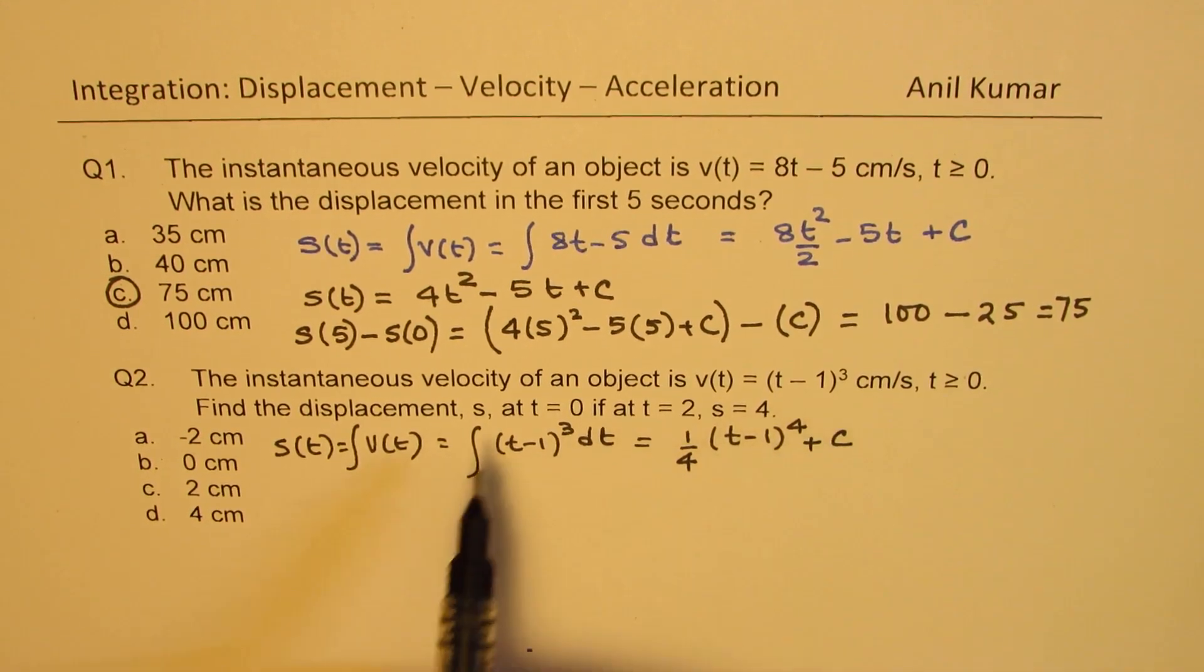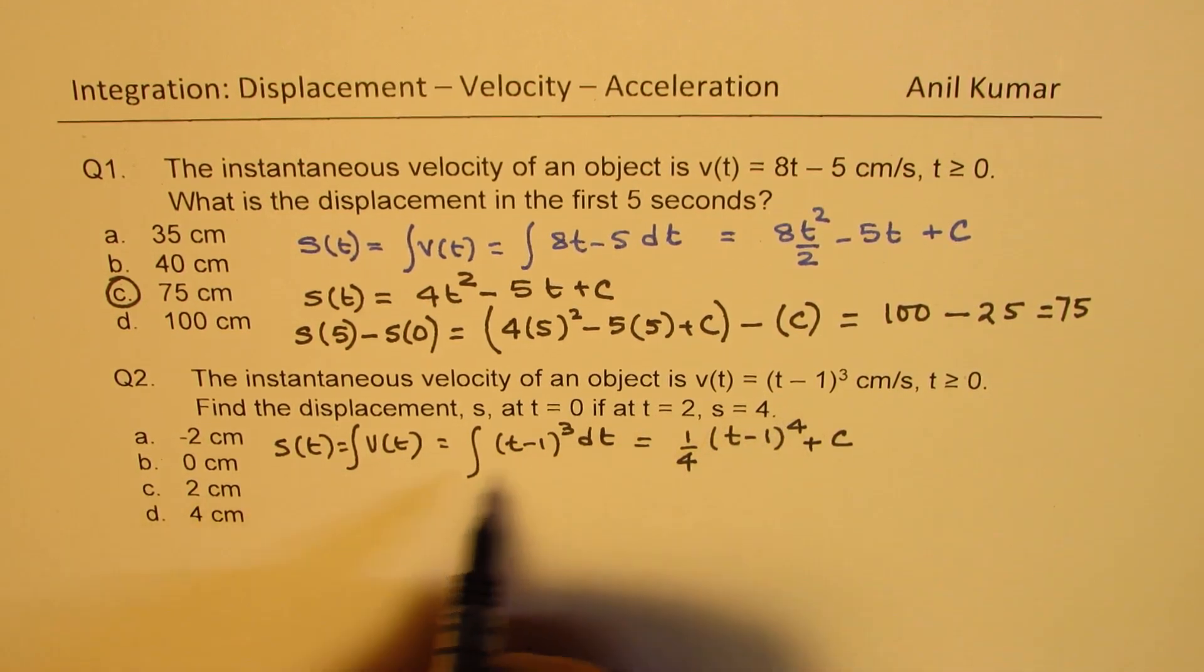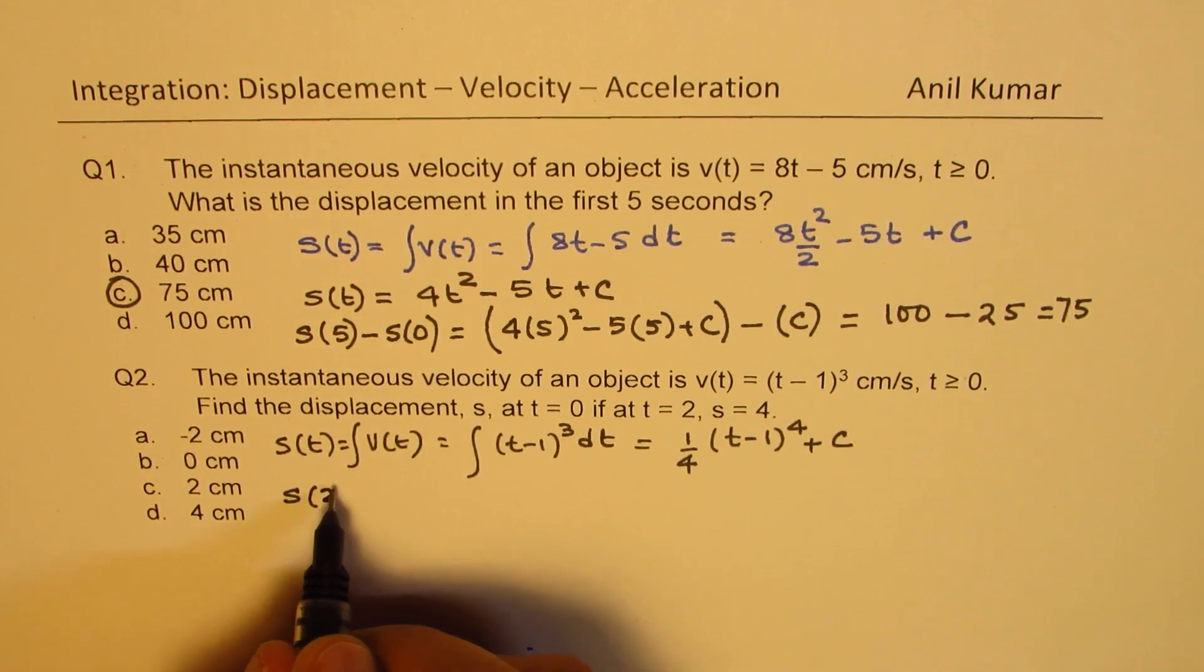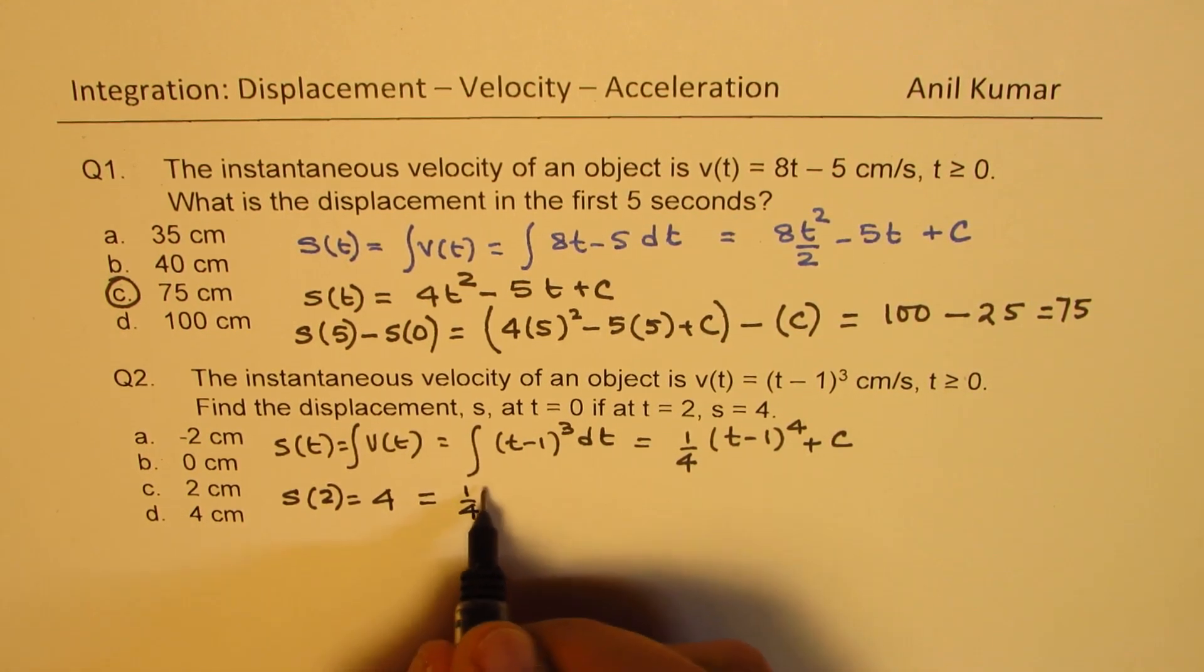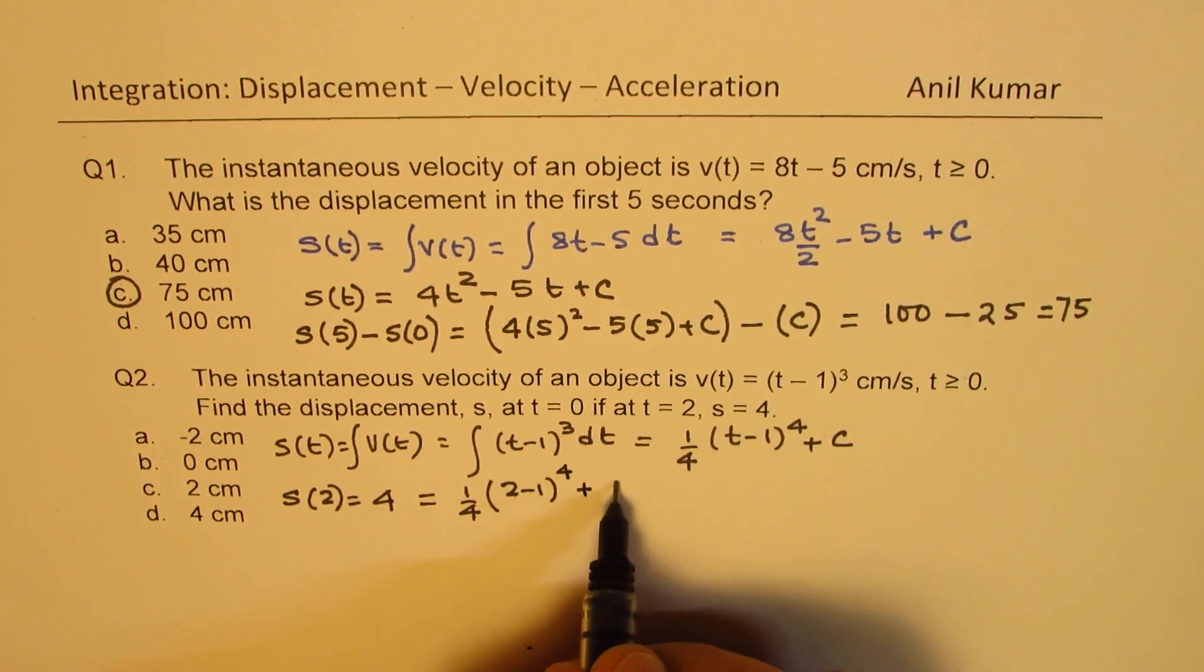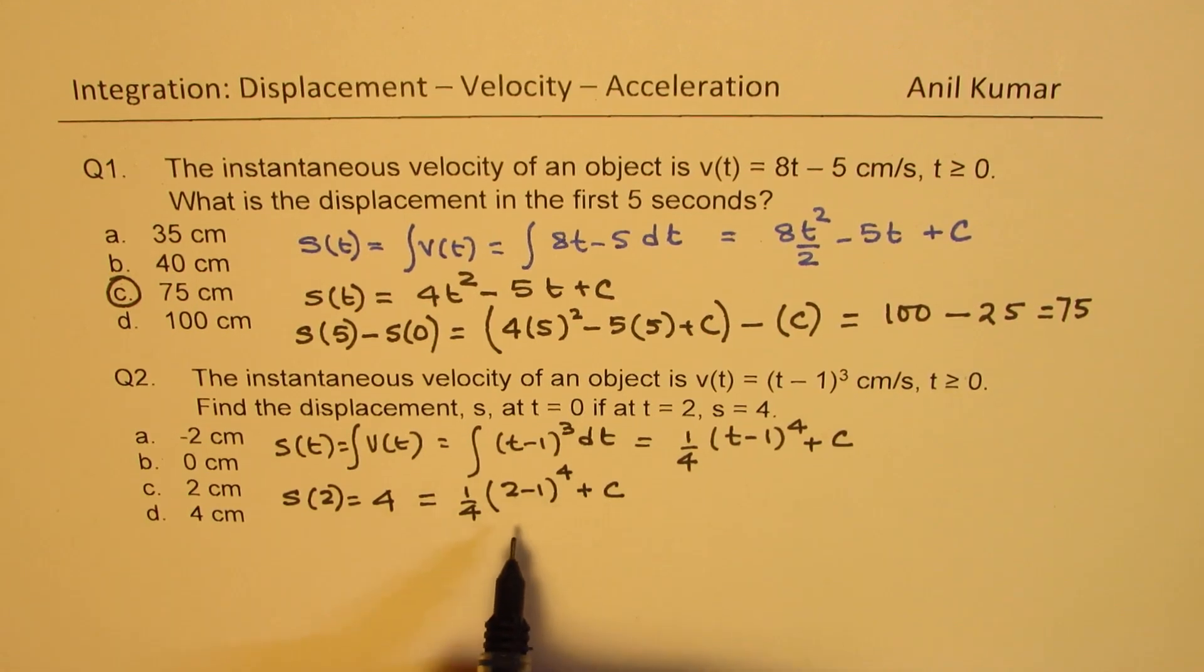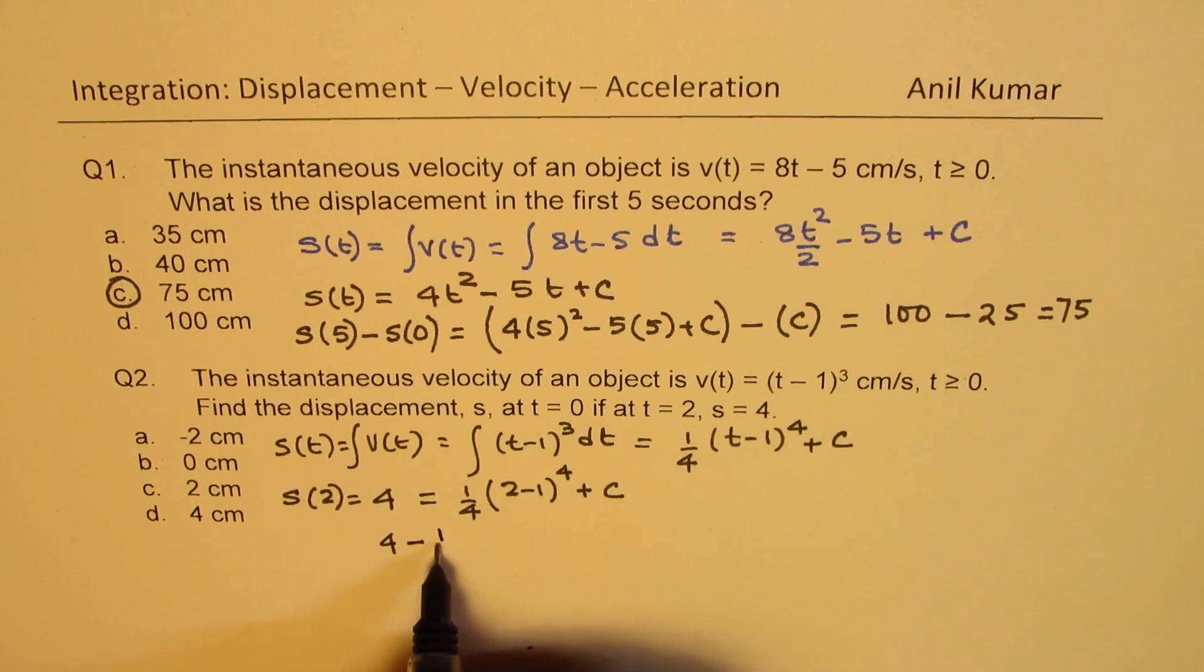Now we are given the initial condition that at t equals 2, s equals 4. So we know that s(2) is actually equal to 4. So we'll substitute 2 here. So we have 1 fourth of (2 minus 1) to the power of 4 plus c. So we can find the value of c from here. So this is 2 minus 1 is 1, 1 to the power of 4 is 1. So we get 1 over 4 here. So I'll actually take it to this side. So 1 over 4 take away from 4 should be the value of c.